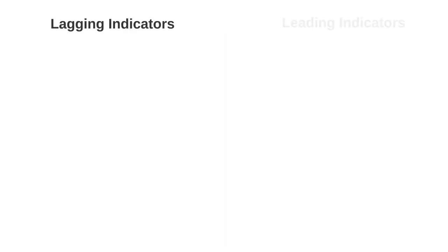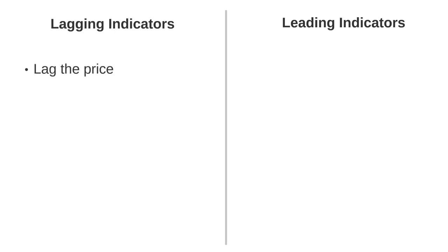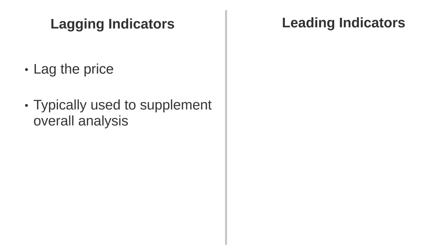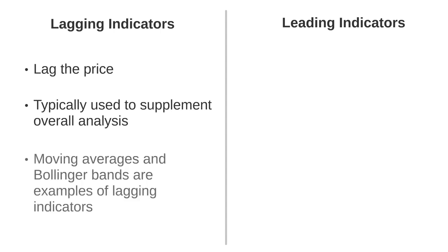Indicators can typically be split into two different types: lagging indicators and leading indicators. Lagging indicators, as the name suggests, lag the price movement. The information and data these indicators show develops and changes as a result of past price movement. These indicators are typically the ones a trader would use to supplement their analysis of a particular market. Indicators such as moving averages and Bollinger bands are considered to be lagging indicators. We will look at these in more detail later on in the video.